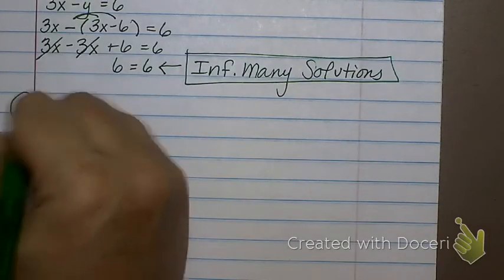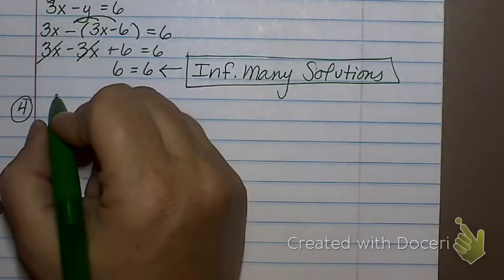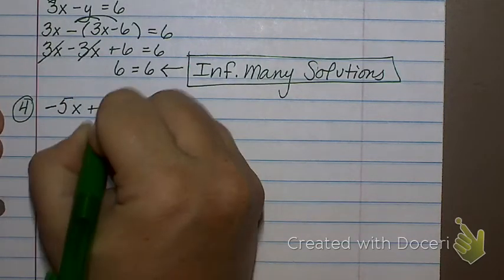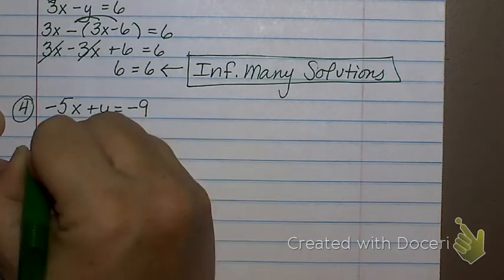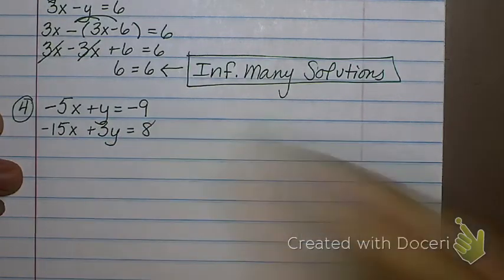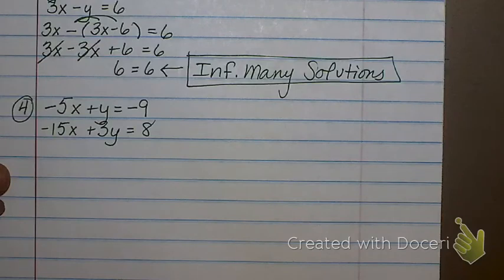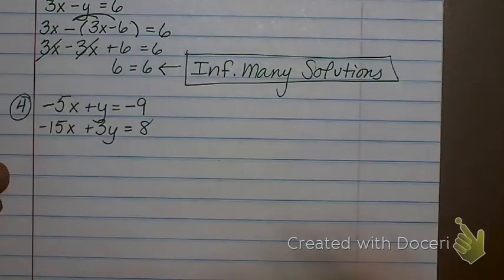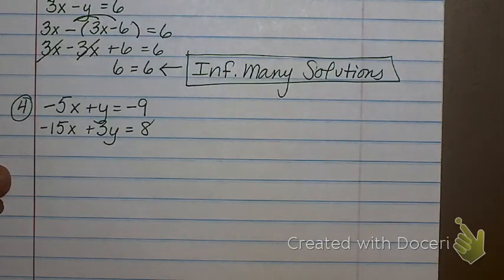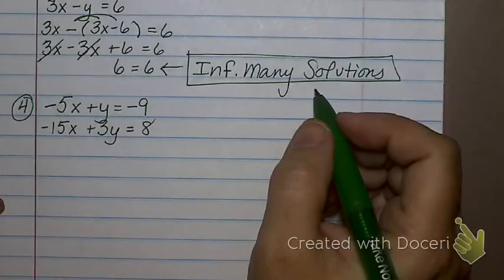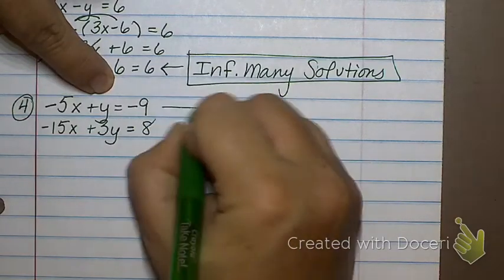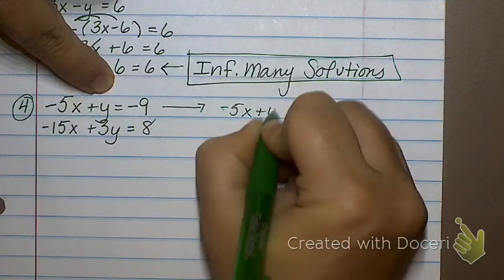Number 4. Negative 5x plus y equals negative 9. Negative 15x plus 3y equals 8. Is one of the letters by itself yet? No. So I got to do that, don't I? Yes. So which one should I get by itself? Y in the first equation. So I'm going to take this first equation, negative 5x plus y equals negative 9. And what should I do? Add 5x.